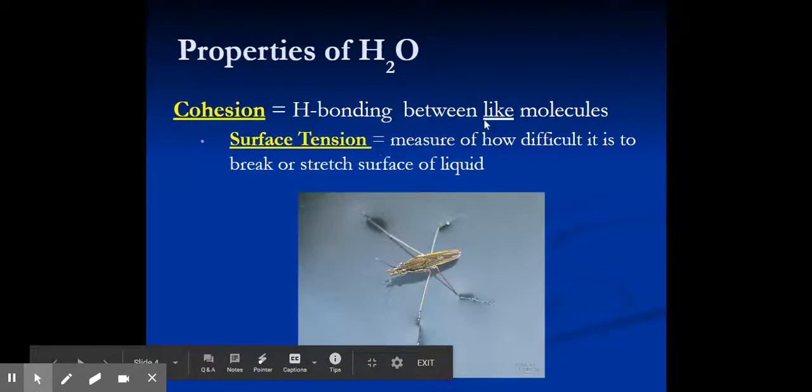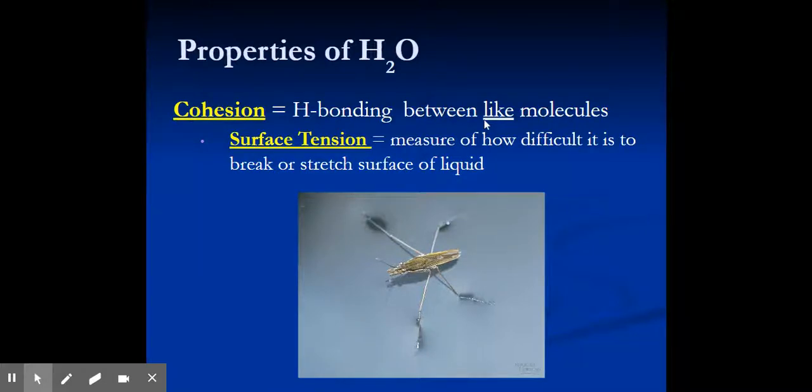Next up, we're going to talk about a property of water, specifically cohesion. If we break apart this word into prefix and suffix, that prefix co represents like together, like co-workers. When we're talking about cohesion, we're talking about things sticking to or being attracted to like molecules. This would be water basically wanting to stick to itself or stick to other water molecules.